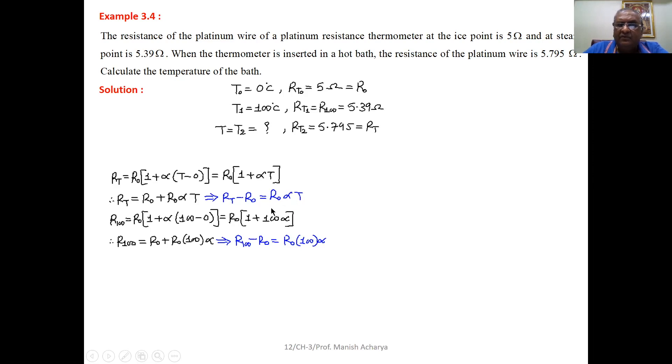Similarly, prepare another equation for 100 degrees Celsius. So R100 equal to R0 into 1 plus alpha into 100 minus 0. That is equal to R0 into 1 plus 100 alpha.